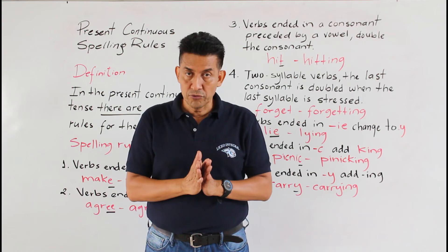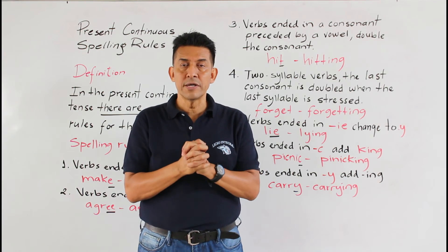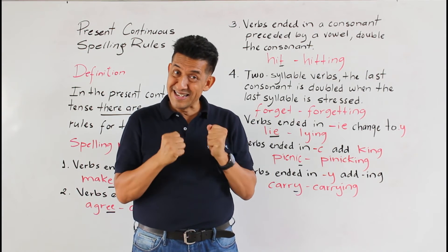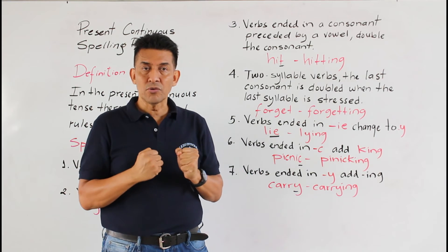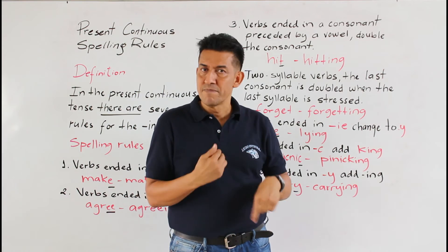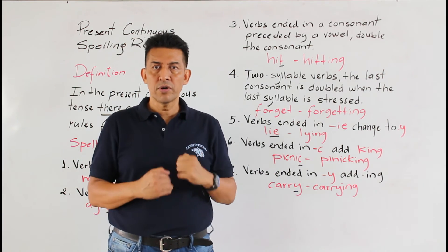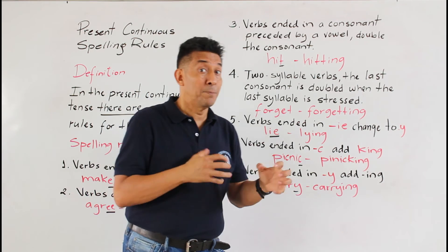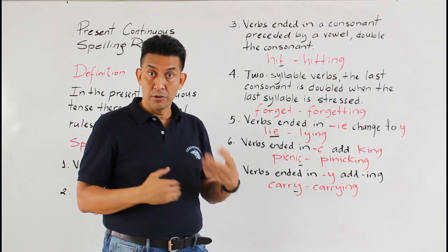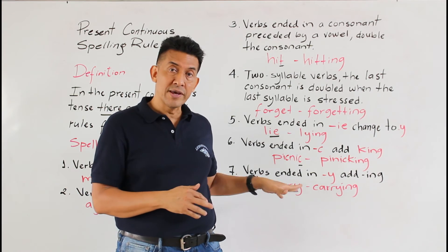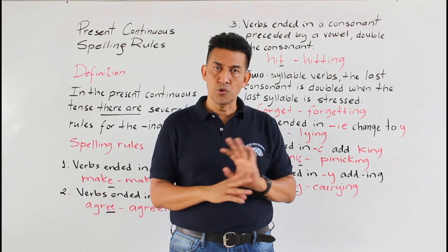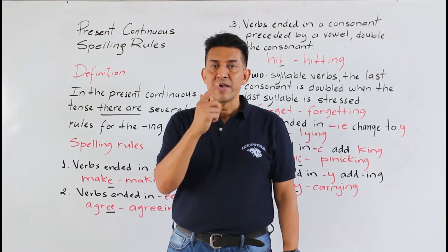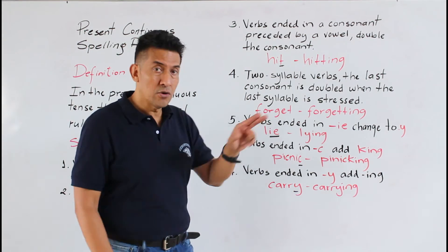Entonces, insisto, estas reglas yo las debo aprenderme y tenerlas claras, ¿por qué? Porque el presente continuo se está utilizando a menudo — es lo que se está haciendo en este momento. Por ejemplo, yo puedo decir: 'Hey, I am teaching English.' Como ven, esto es de escritura; no tenemos problema al hablarlo, pero en la escritura es muy importante tener estas reglas. Vamos a ver el número cinco.